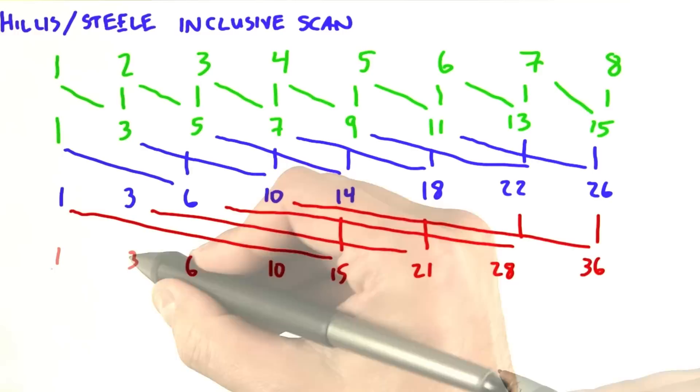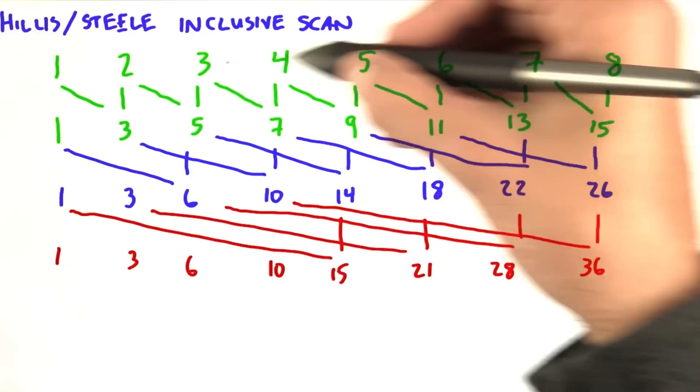And now, take a look at what we got. This bottom row here is the inclusive scan of the top row here.